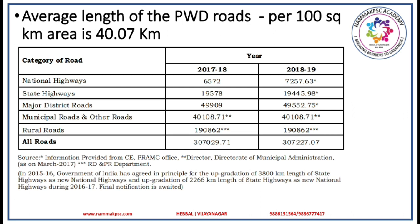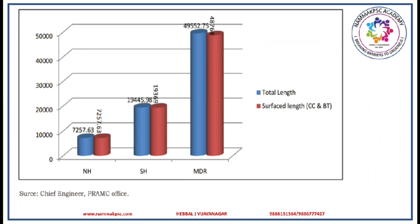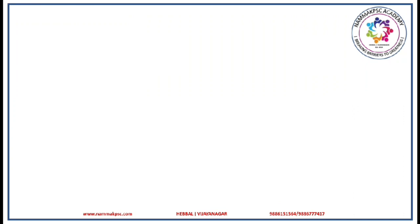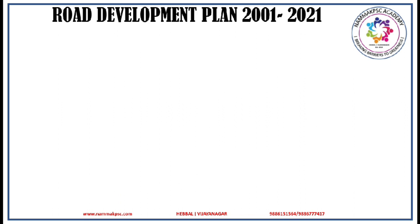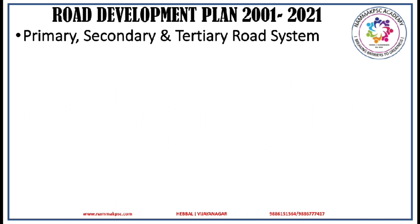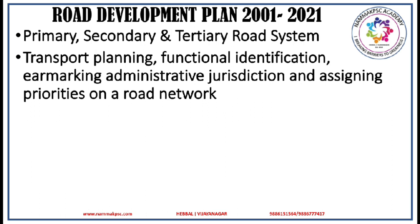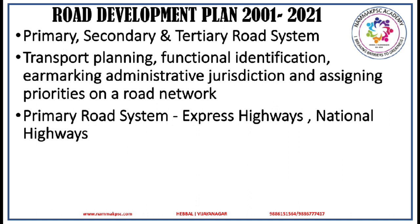The details of the road length in Karnataka is presented in this table. This graph presents the details of length of blacktop and cement concrete surface roads in Karnataka. The Government of India, Ministry of Surface Transport, has prepared the road development plan which is being implemented from 2001 and shall be implemented till 2021. In this road development plan, the concept of primary, secondary and tertiary road system has been introduced for the purpose of transport planning, functional identification, earmarking, administrative jurisdiction and assigning priorities on a road network.